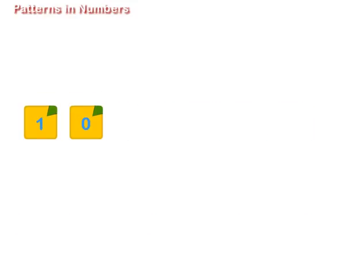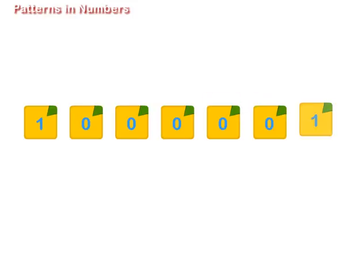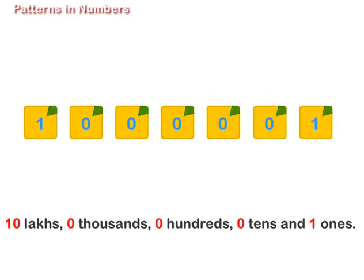1,00,00,001 stands for 10 lakhs, 0 thousands, 0 hundreds, 0 tens and 1 ones.